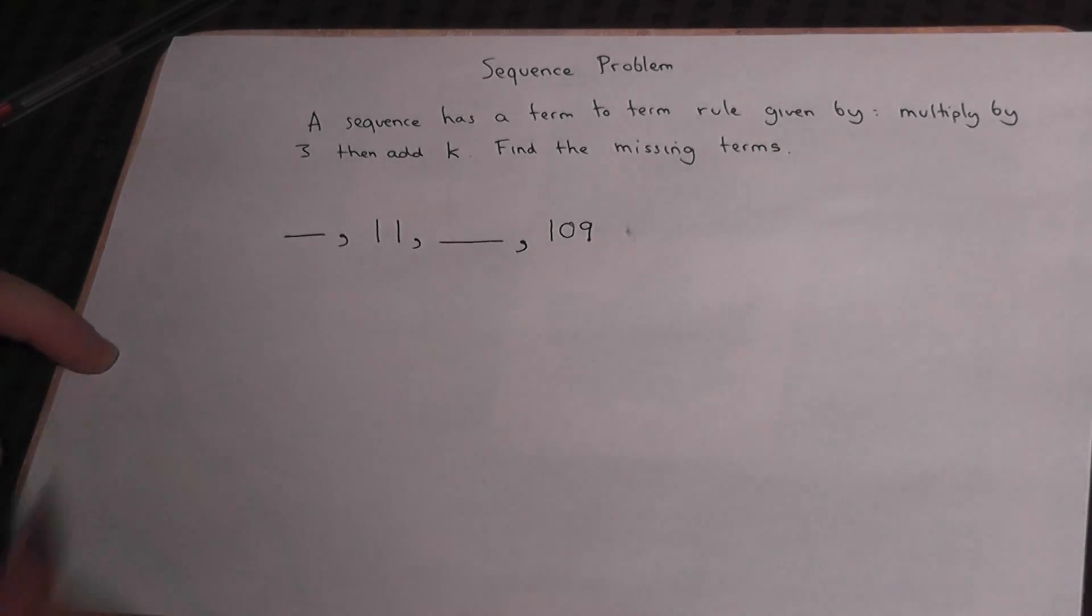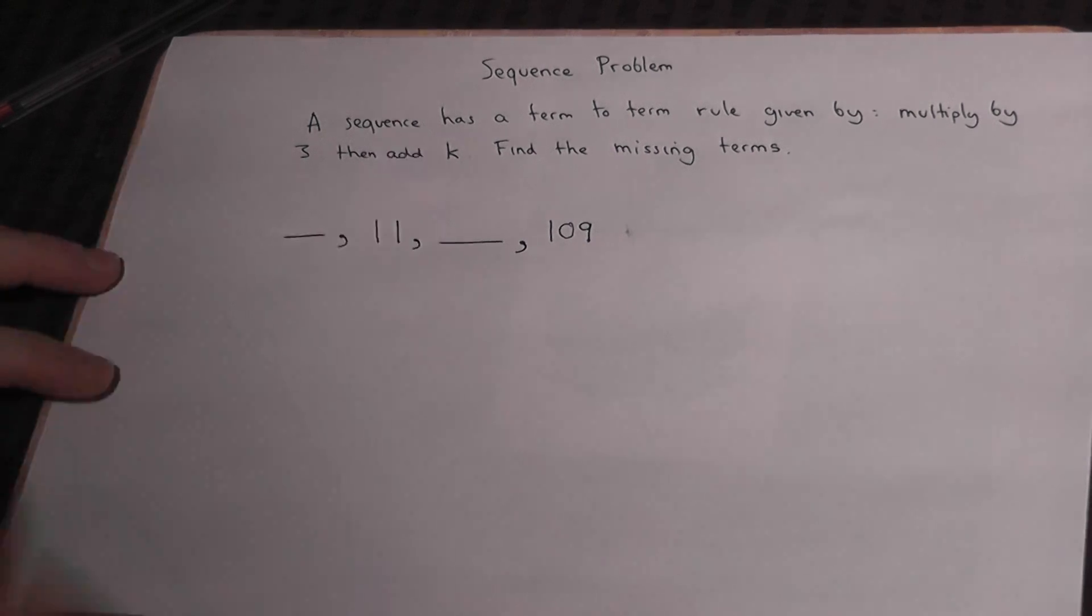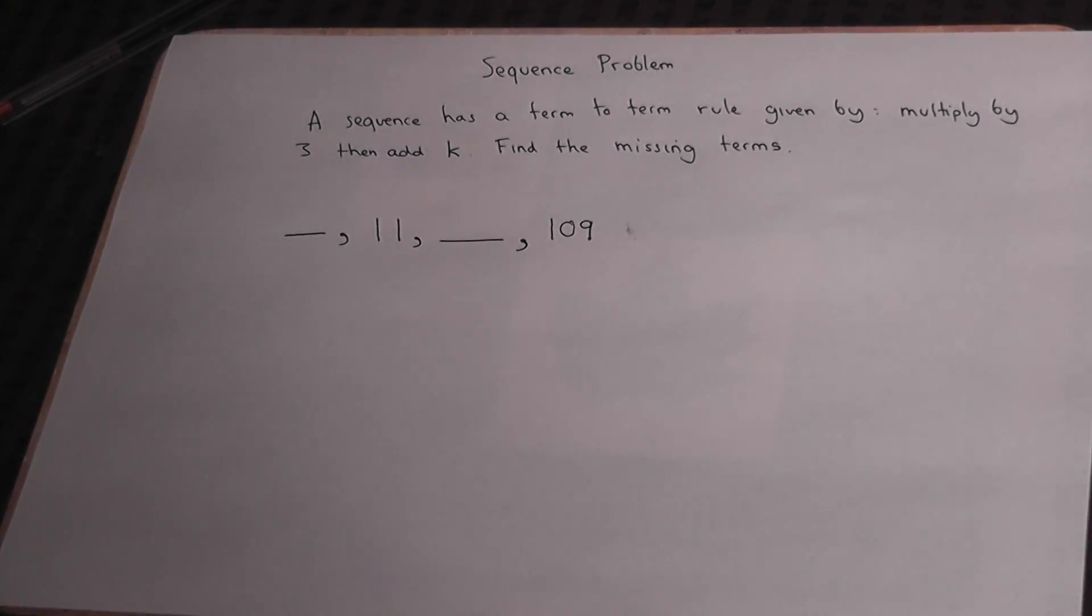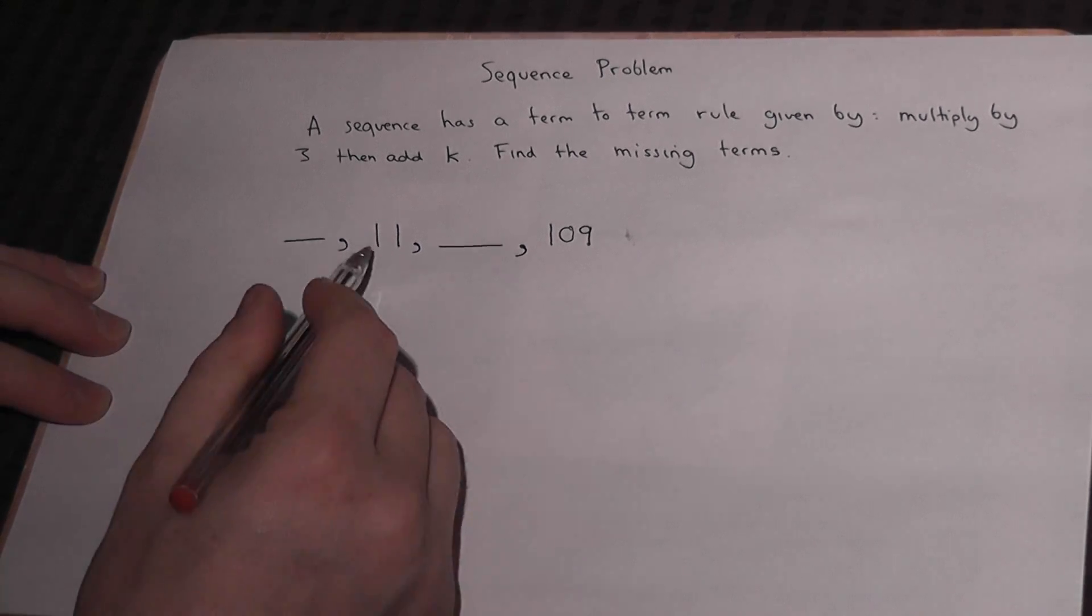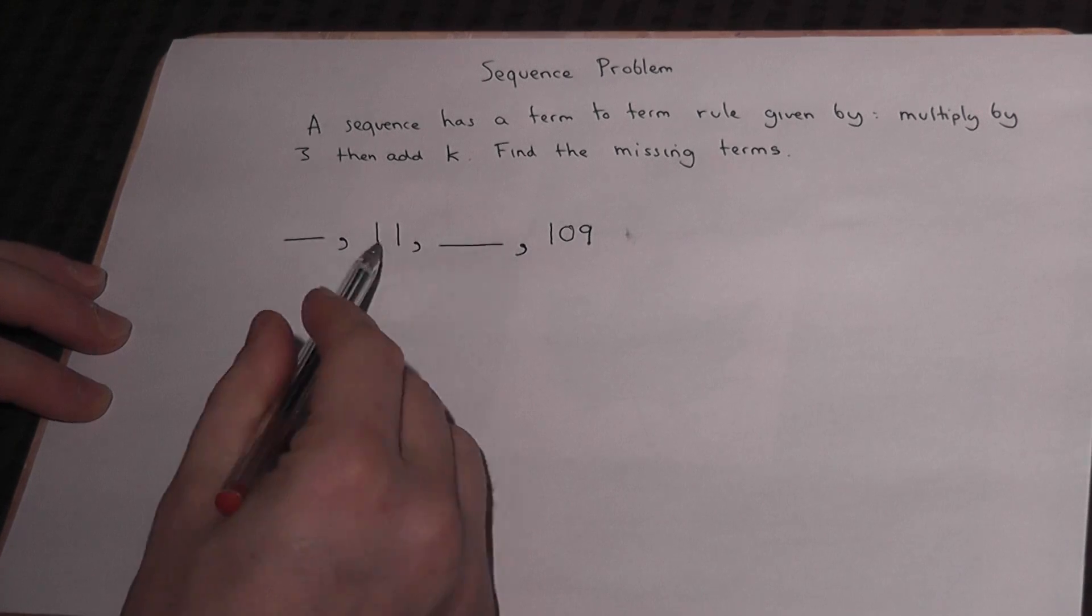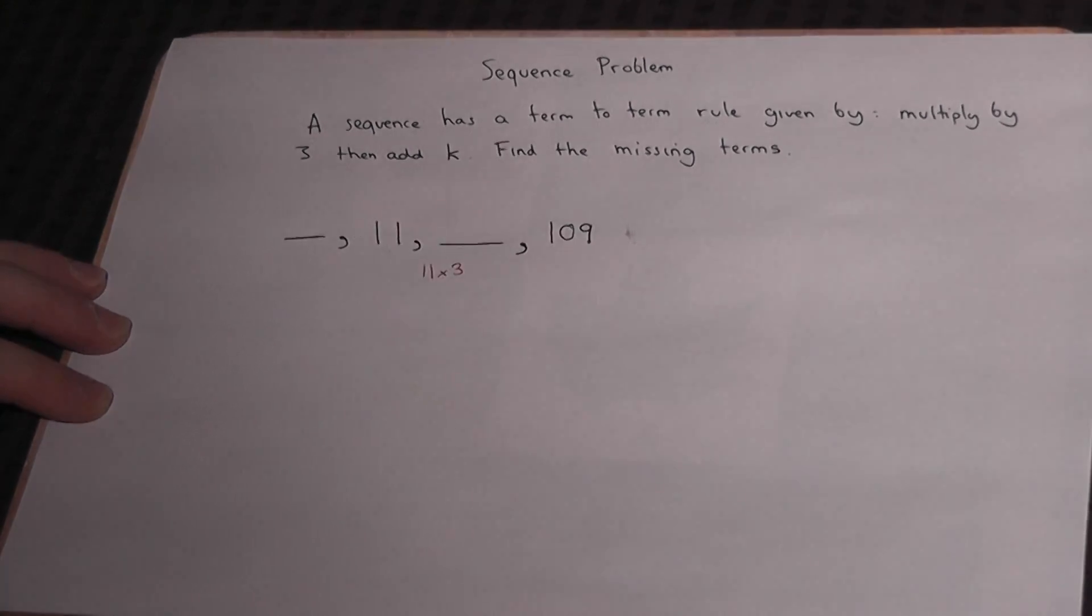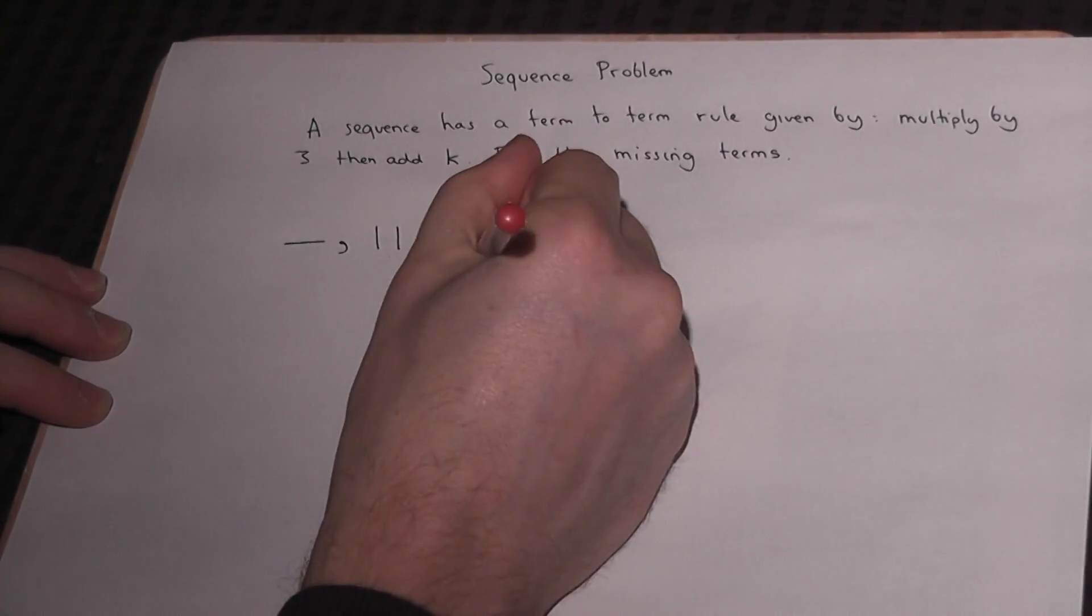And we want to find the missing terms. To find these terms we have to actually find what k is, and we use some algebra for this. Now we know this term here is 11. So to get to the next term, we must times this by 3. So we must do 11 times 3, and then add on k.